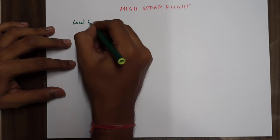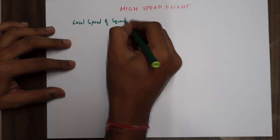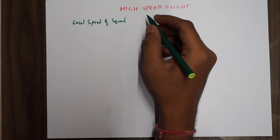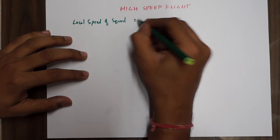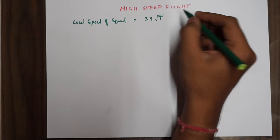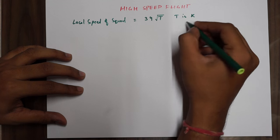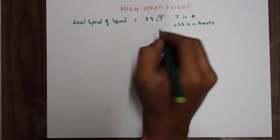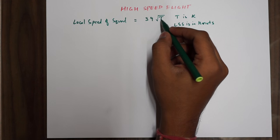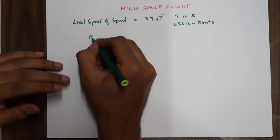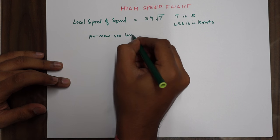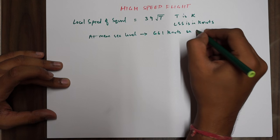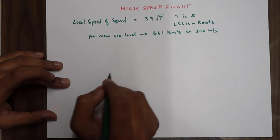The first thing we need to know is the local speed of sound (LSS). The speed of propagation of small pressure waves depends on temperature only. The speed of sound is dependent on temperature only and is given by the formula 39√T, where T is in Kelvin and the resulting LSS is in knots. The local speed of sound is dependent only on temperature.